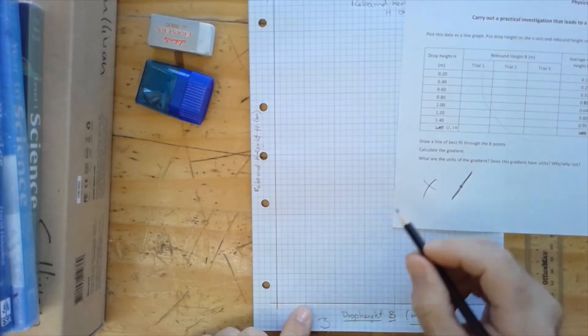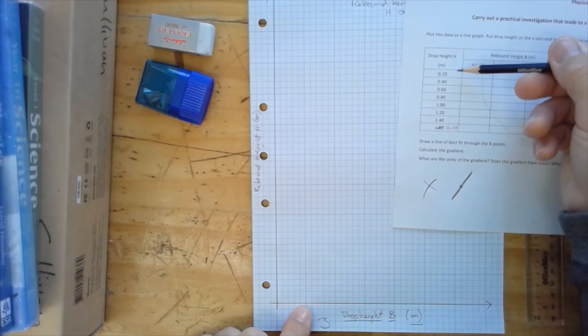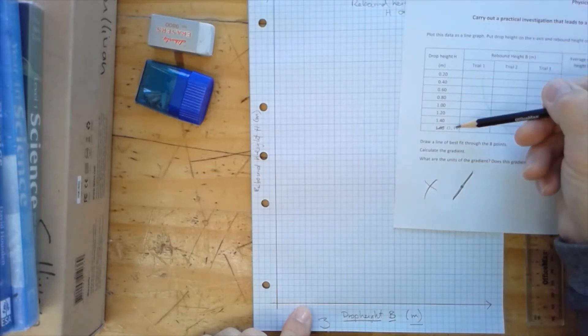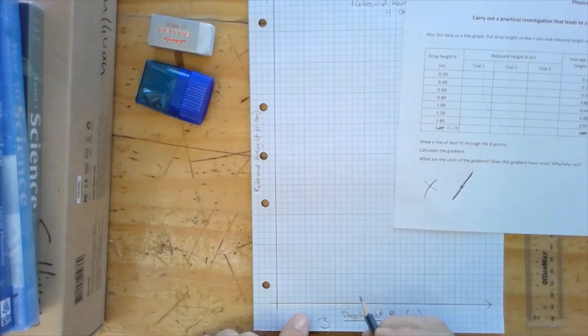So for my independent variable, it varies from 0.1 meters up to 1.4 meters. So I could have 0, 0.2, 0.4, 0.6, 0.8, 1.0, 1.2, 1.4.